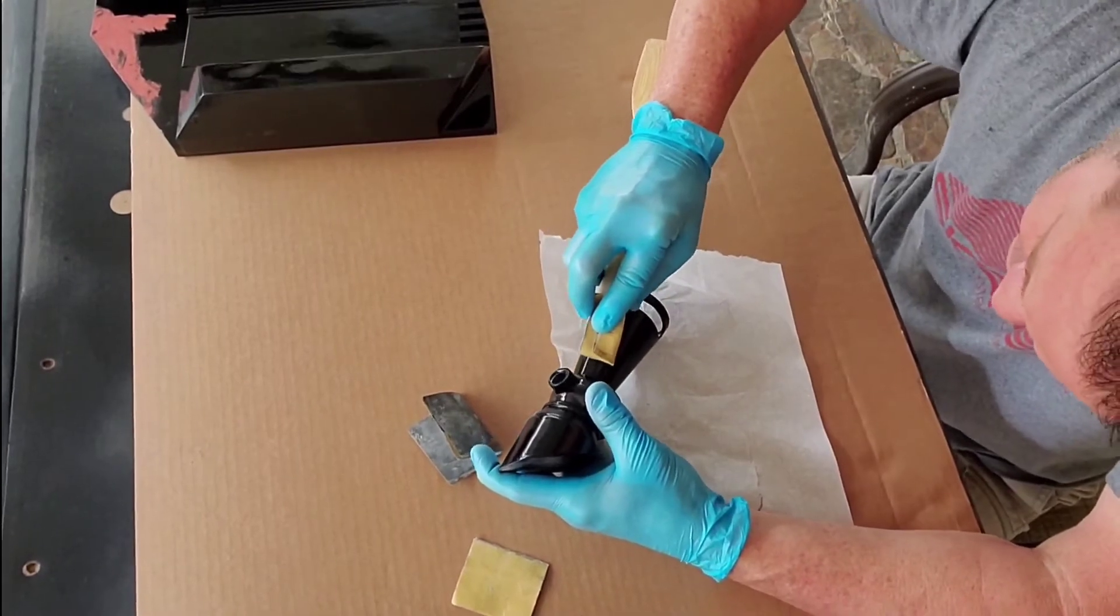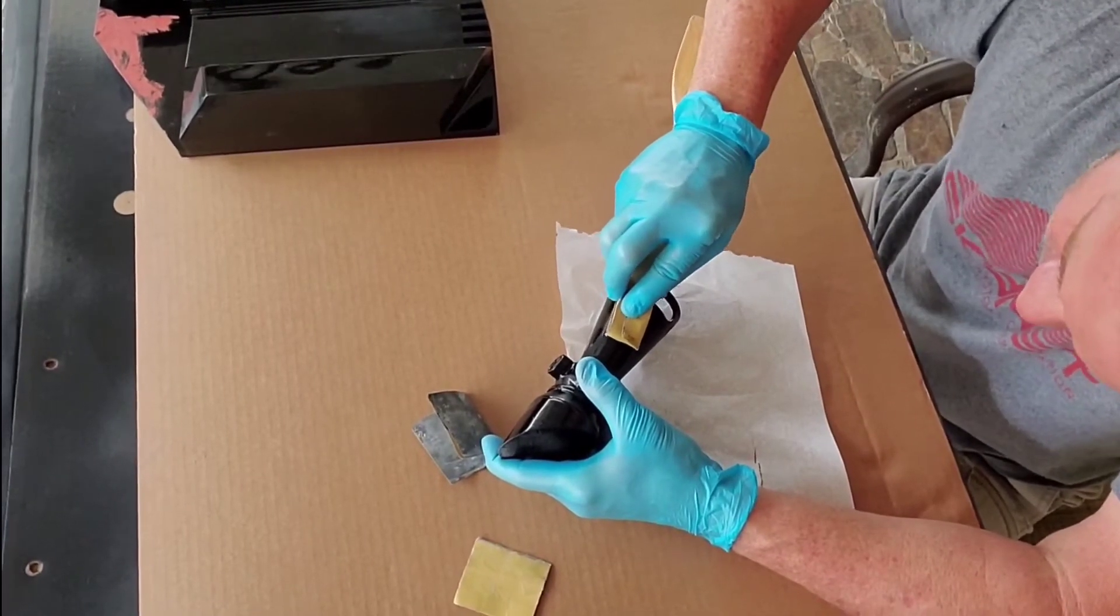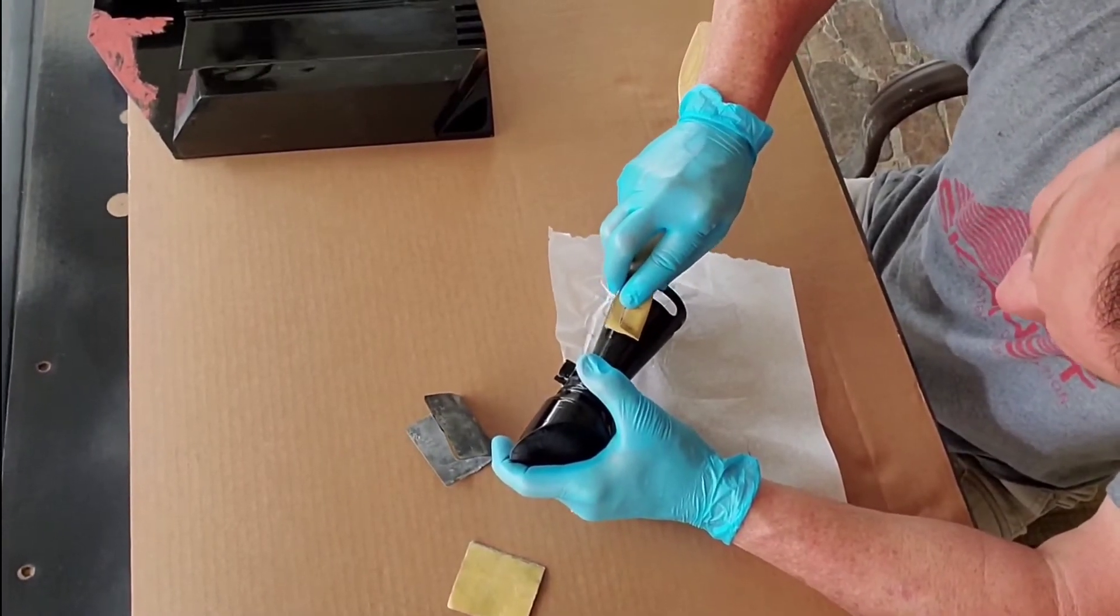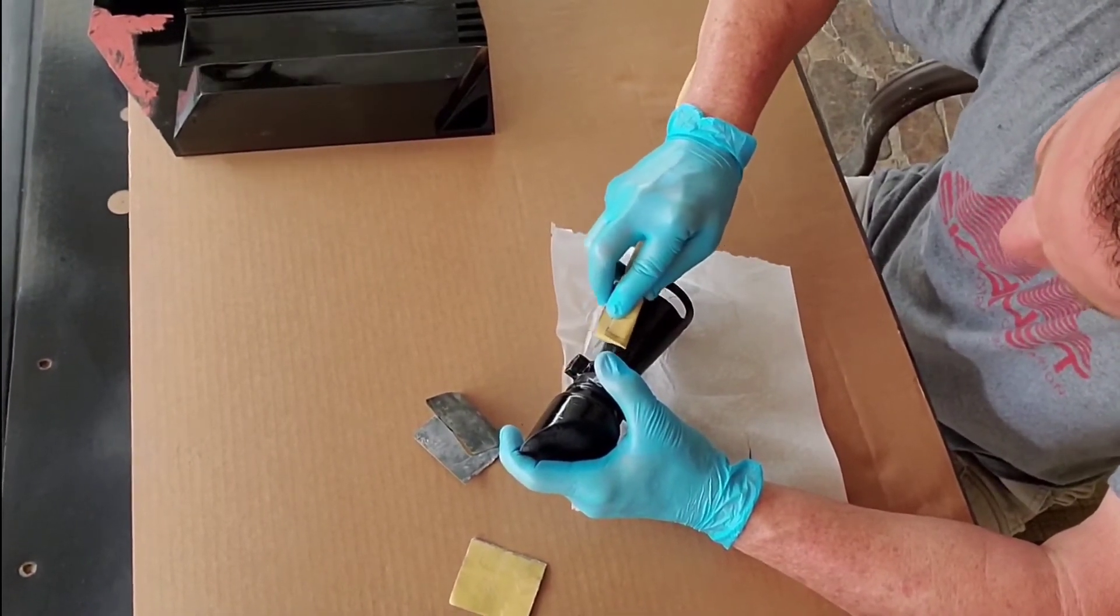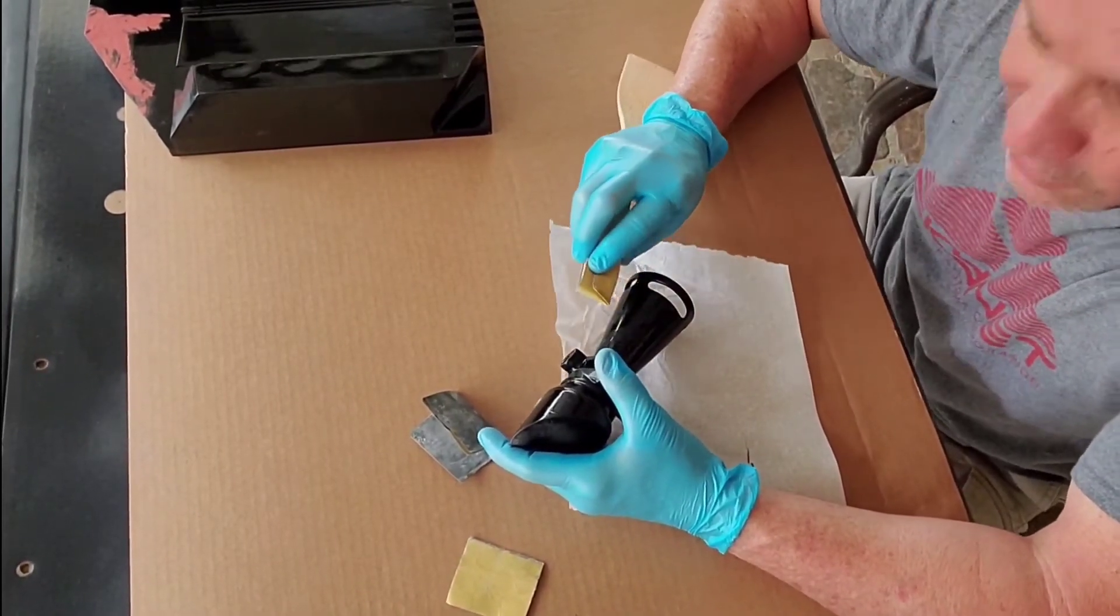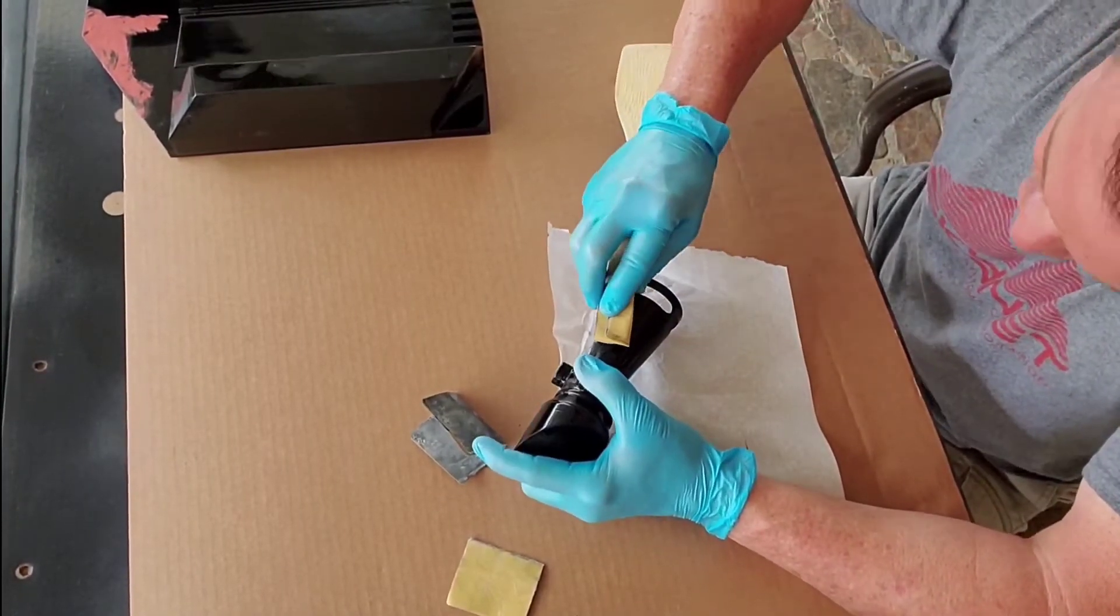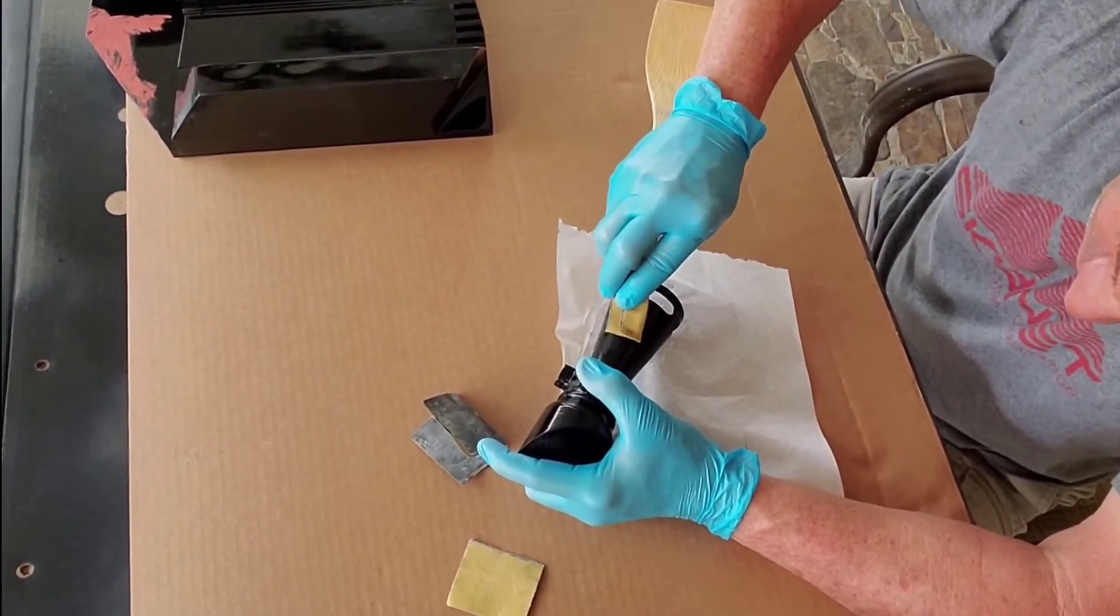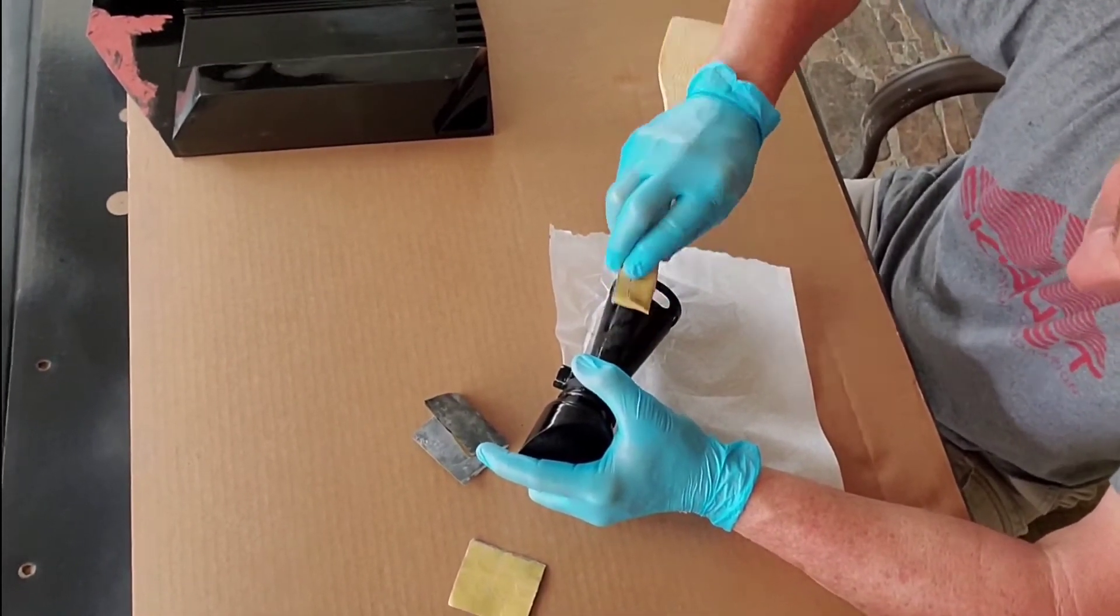And I'm going to start going ahead and sand this for you guys. You want to start very easy, just on the surface. And you can go up and down, you can do circular motions, whatever the case is, but you're working only the run. And you want to try to just go ahead and get that top layer of paint off where the run is. That's it. Try not to go into the surrounding areas or do anything like that.